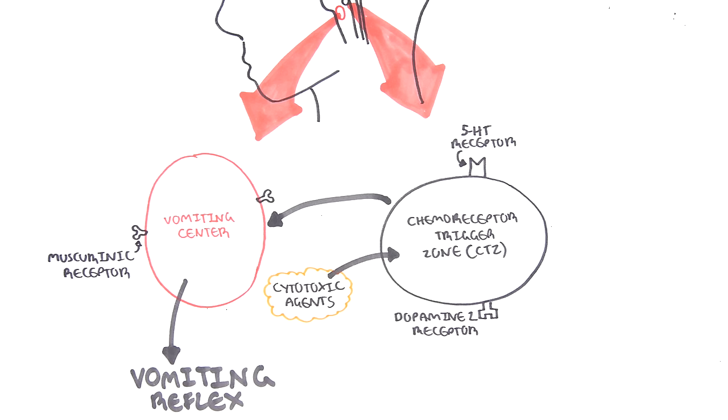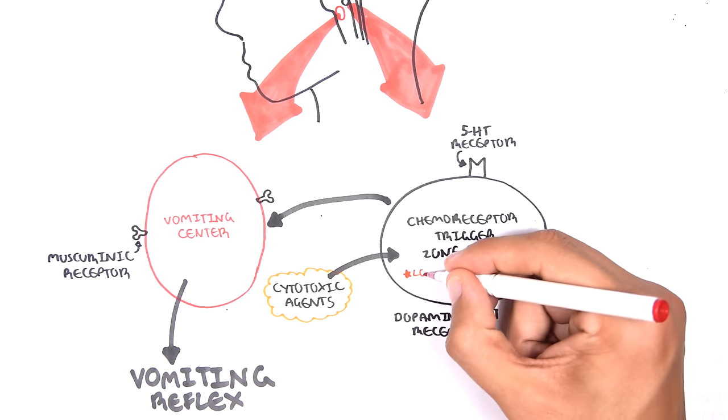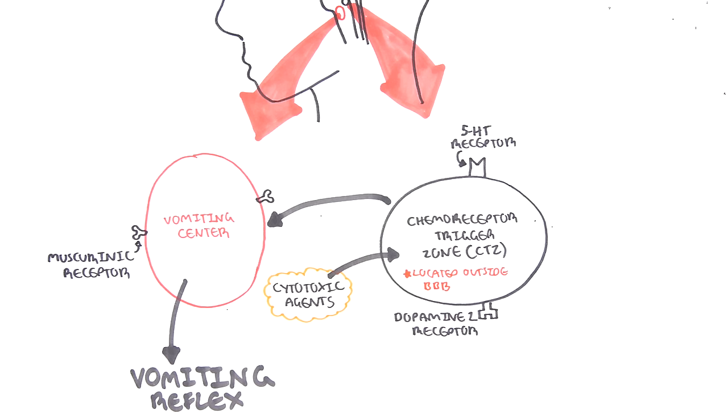Though the chemoreceptor trigger zone is located in the medulla, like the vomiting center, the CTZ is located conveniently outside the blood-brain barrier. The blood-brain barrier prevents circulating substances in the blood from making contact with the brain and areas of the brainstem. Because the CTZ is situated outside the blood-brain barrier, it is more permeable to circulating substances such as cytotoxic agents like chemotherapy.